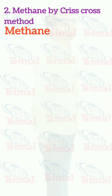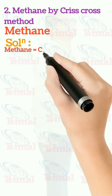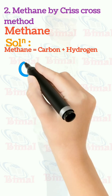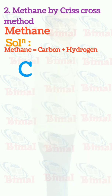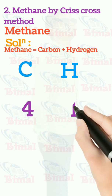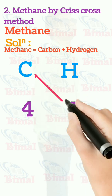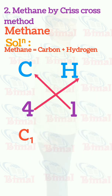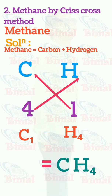Molecular formula of methane by criss-cross method. Methane is equal to carbon plus hydrogen. Symbol for carbon is C, symbol for hydrogen is H. Valency of carbon is 4 and valency of hydrogen is 1. When we do criss-cross, we write C1 and H4, which is equal to CH4. We don't write C1, so the molecular formula of methane is CH4.